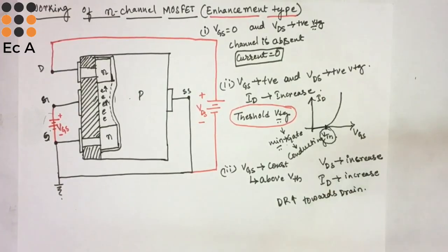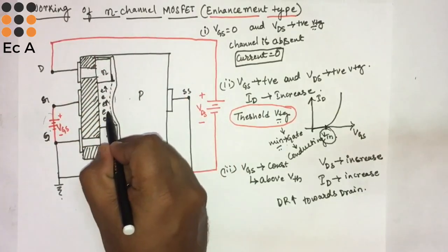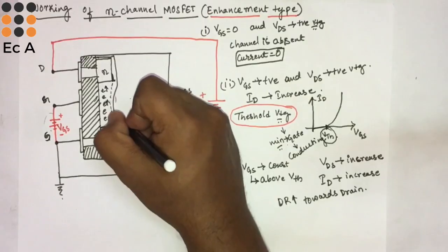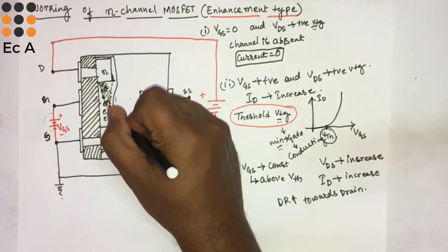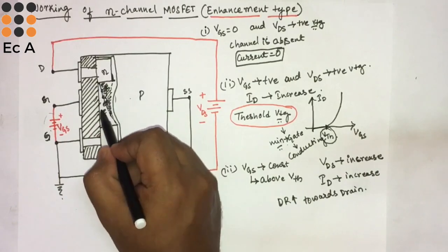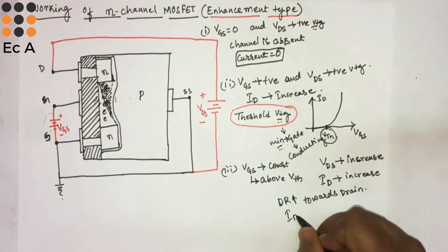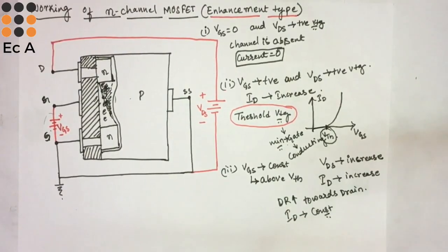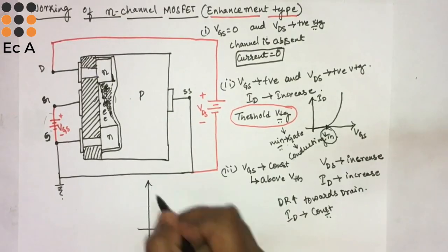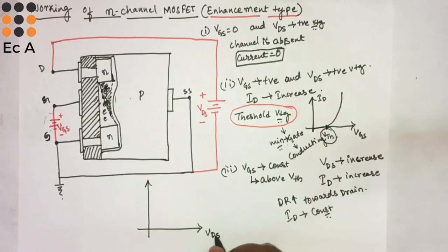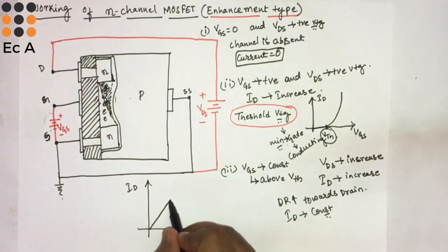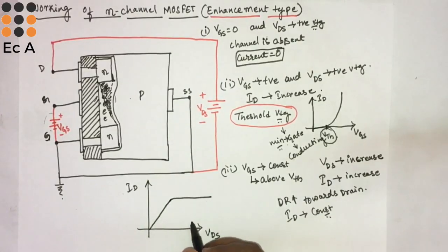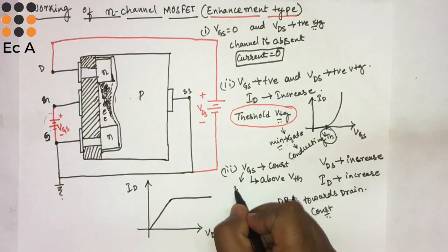As we increase VDS, the depletion width towards the drain increases, and the channel becomes narrow, so the current becomes constant. If we plot the drain characteristics — VDS versus ID — the current increases initially linearly, and once the channel becomes narrow the current becomes constant (saturation).